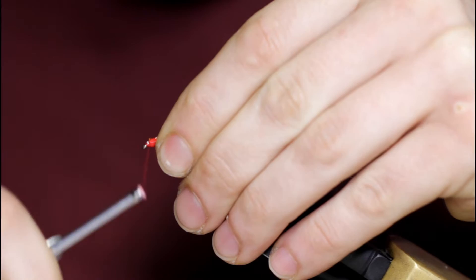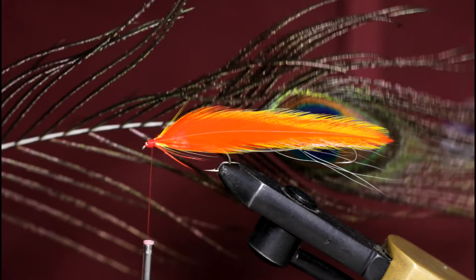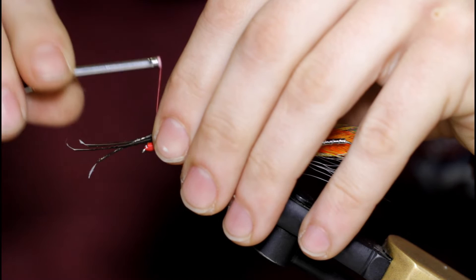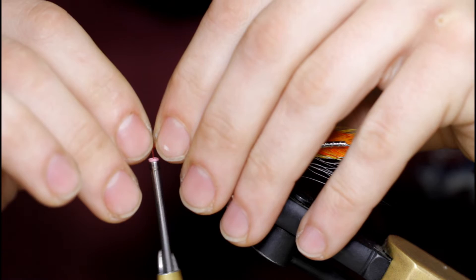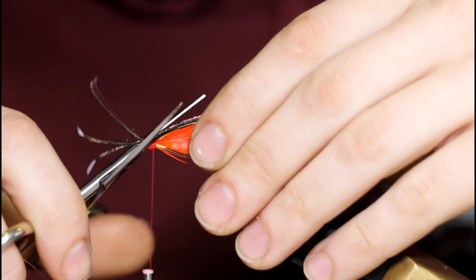Take the thread back to the rear of the head. Come in with some peacock curl. So I'm going to place the peacock curl on top. And just take a few loose wraps over the top here. And that's a good length. So I'm going to come in and cut this off. And that would be the finished pattern right there.